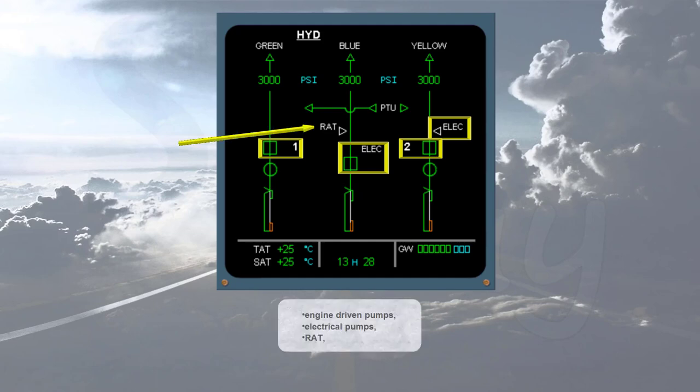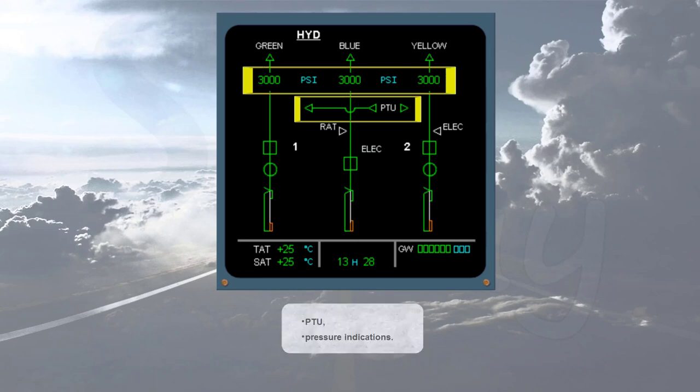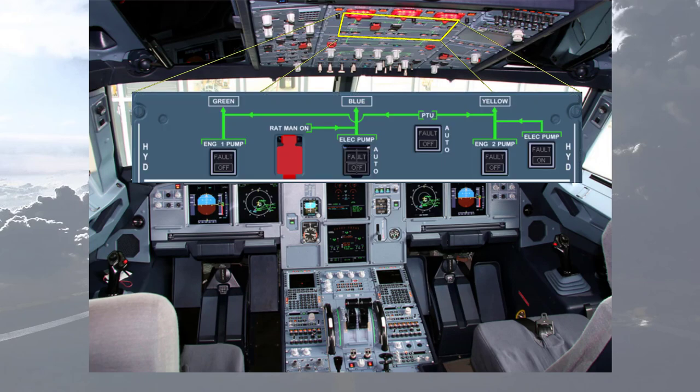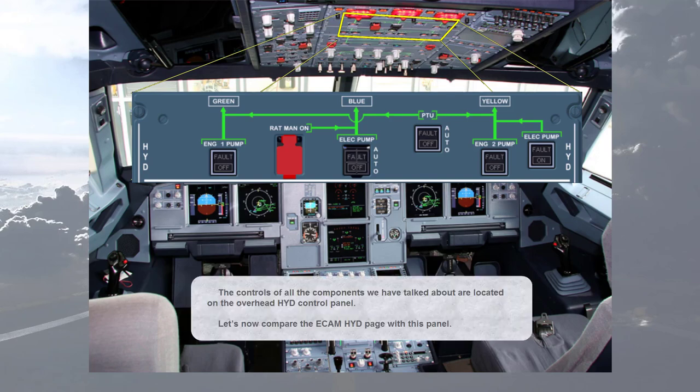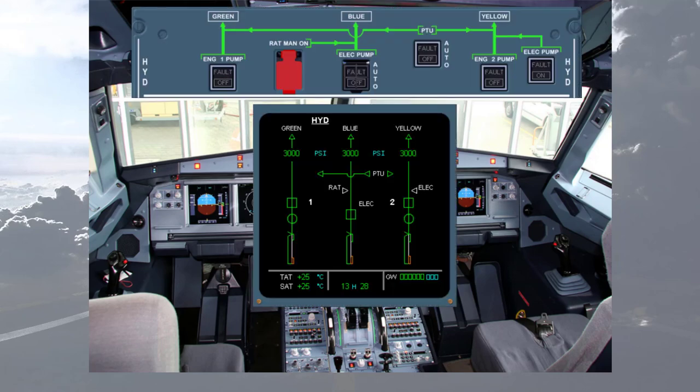The controls of all the components we have talked about are located on the overhead hydraulic control panel. Let's now compare the ECAM hydraulic page with this panel. The hydraulic system is fully automatic, however each pump and the PTU have an associated push button switch for abnormal operation.